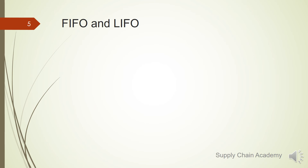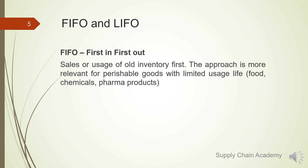FIFO — First In, First Out — is the approach where the oldest inventory purchased is sold or used first. This is more applicable for perishable goods with limited usage life, such as food, chemicals, and pharma products.